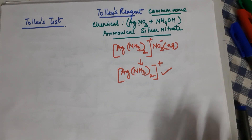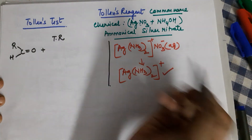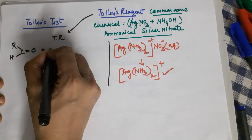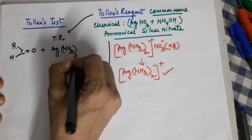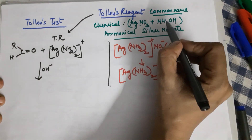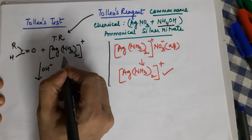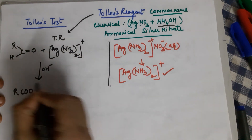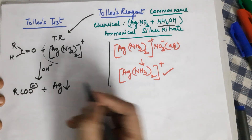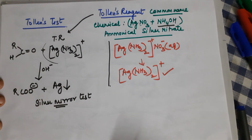When you take an aldehyde and treat it with Tollens reagent — [Ag(NH₃)₂]⁺ — the medium is highly basic because ammonium hydroxide is added during preparation. The aldehyde (RCHO) is oxidized and changes into RCOO⁻, that is a carboxylate ion, while the Tollens reagent transforms into silver metal. This is also why we call this test the silver mirror test.